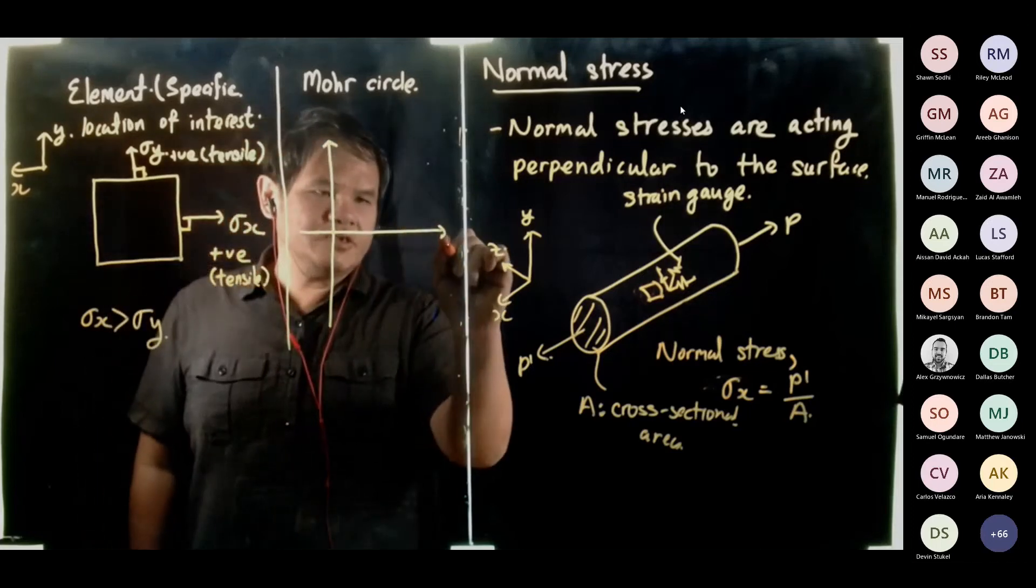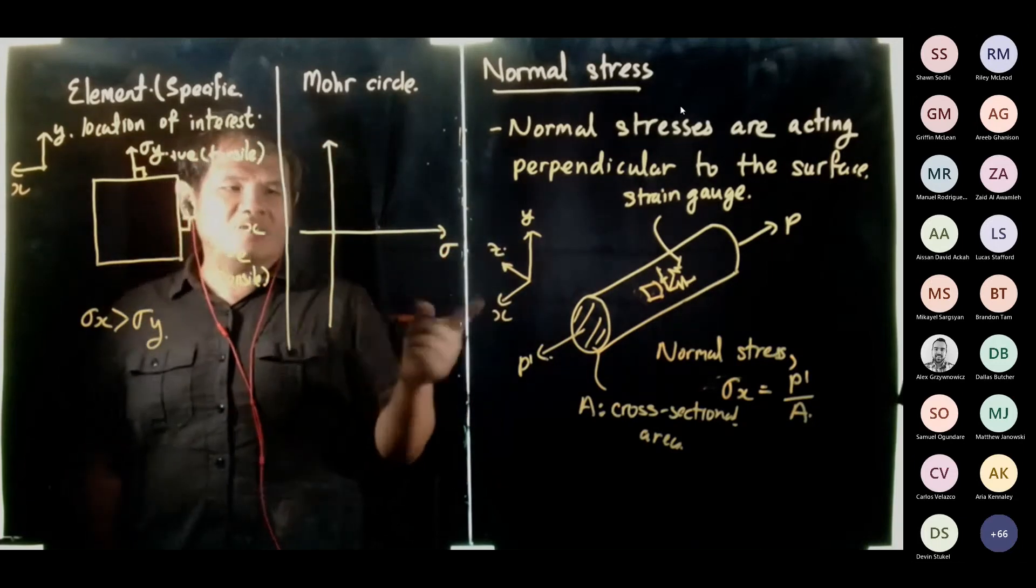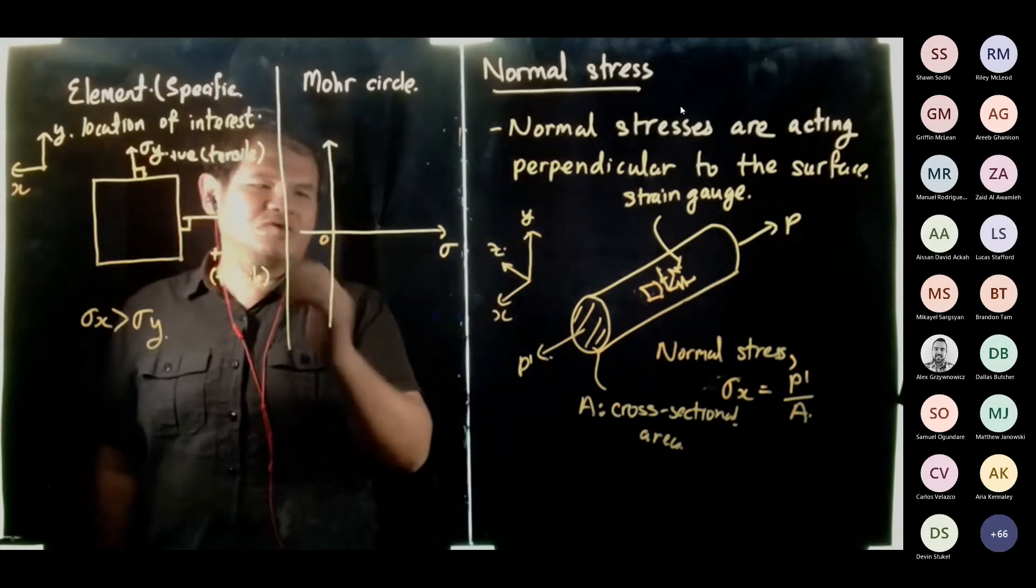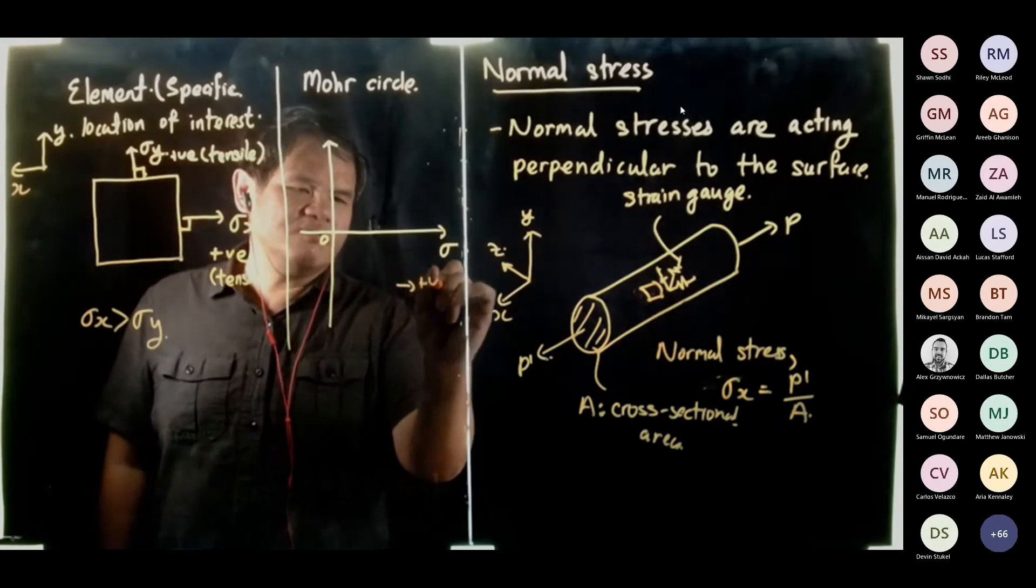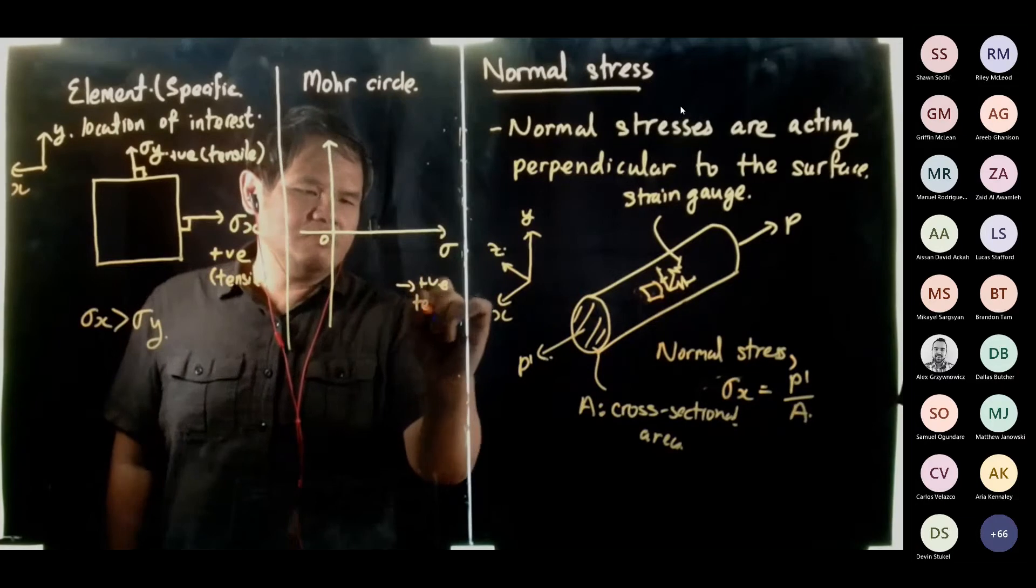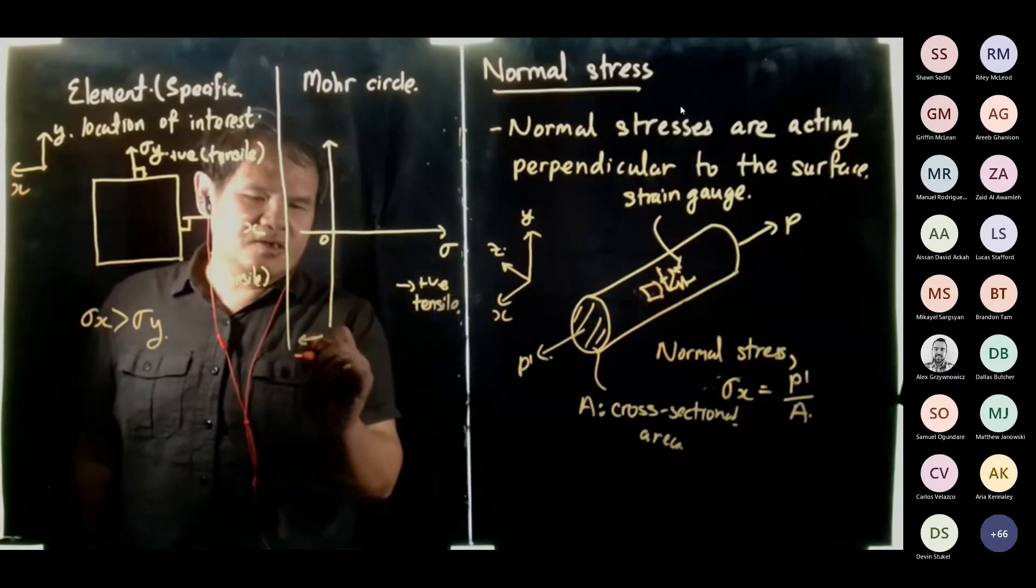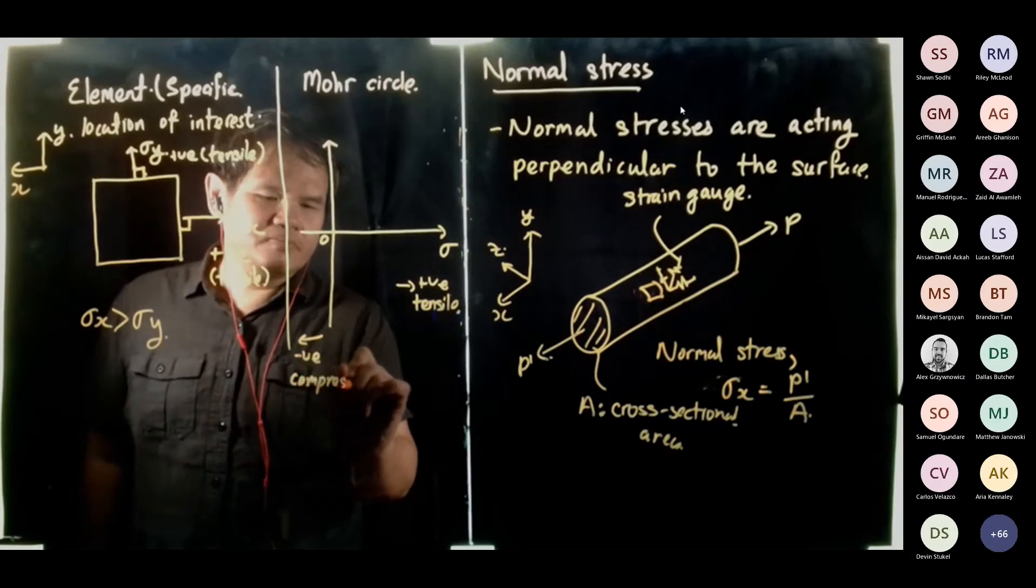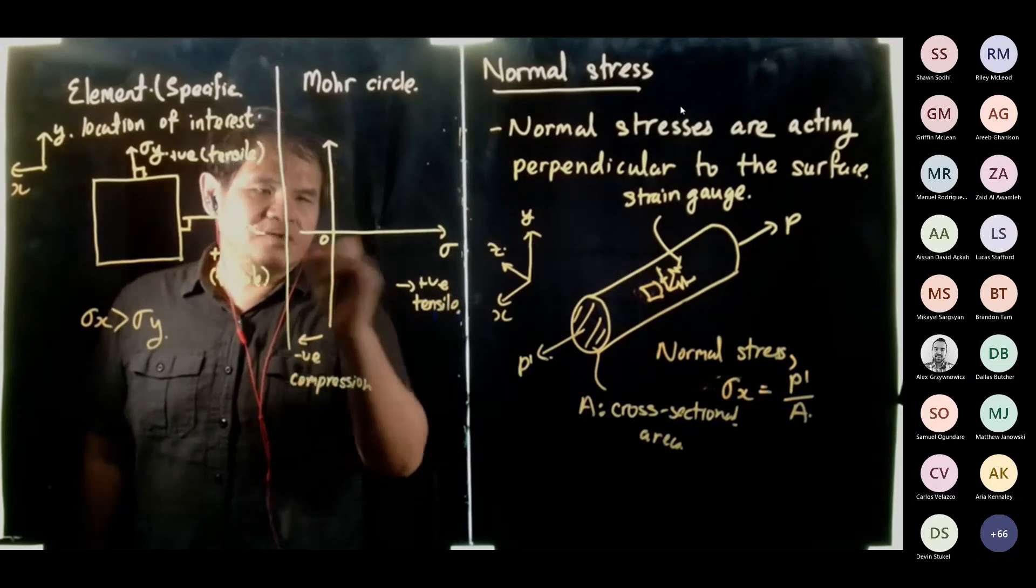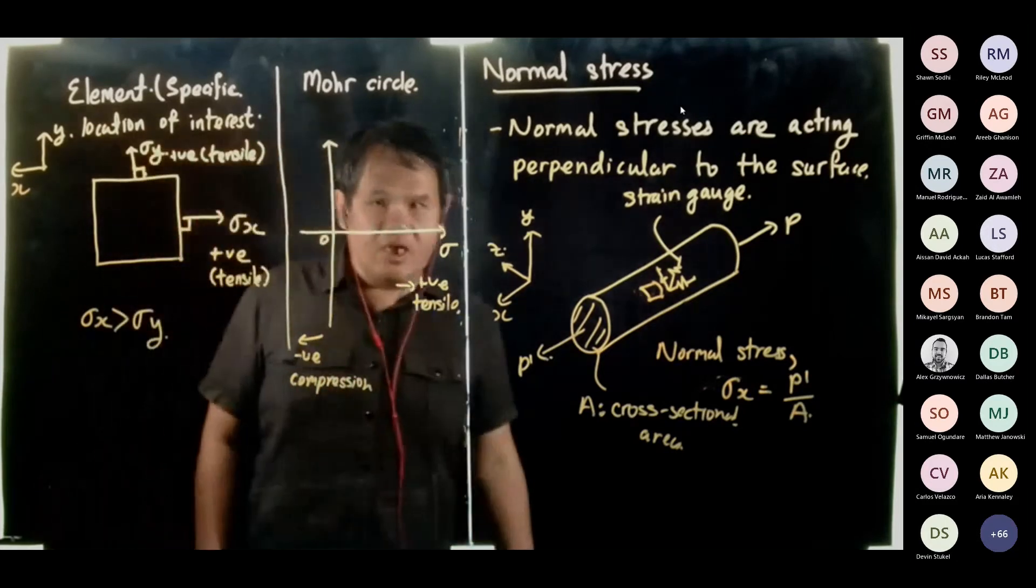The horizontal axis is known as our normal stress. From zero normal stress towards the right means positive, so it's tensile. On this side, negative means it's compressive or compression.